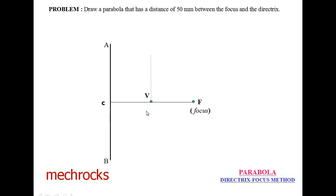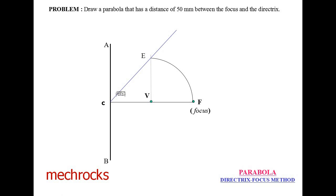Now draw the vertical line at V. Take V to F as the radius with V as center and draw an arc. Draw it from F to E. Now join the C line like this. After the vertex, draw a vertical line like this.